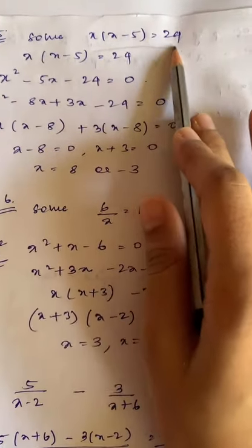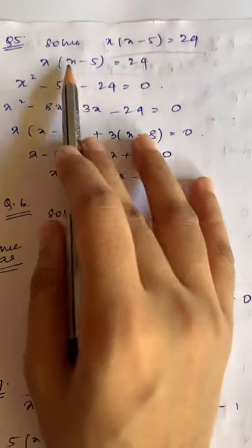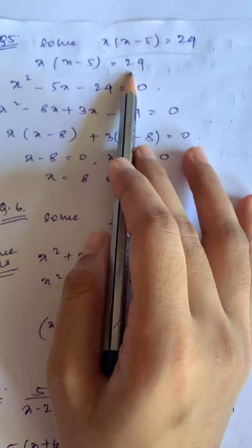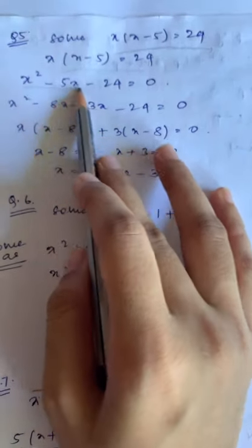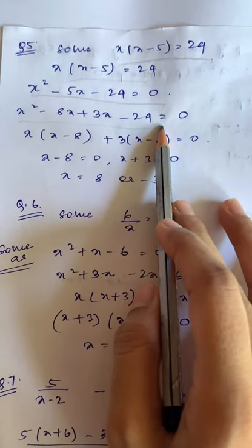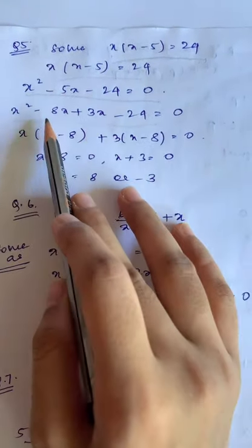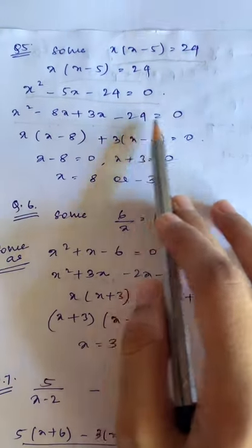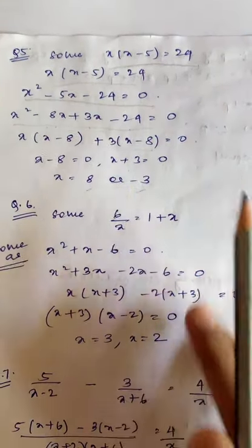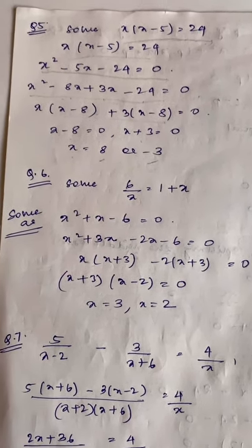The next sum is not in standard form. Expanding x(x - 5) = 24: x² - 5x - 24 = 0. Applying the factorization method and splitting -5x using factors of 24, we get -8x + 3x. Grouping and solving gives x = 8 and x = -3. Factorization and splitting the middle term should now be straightforward.